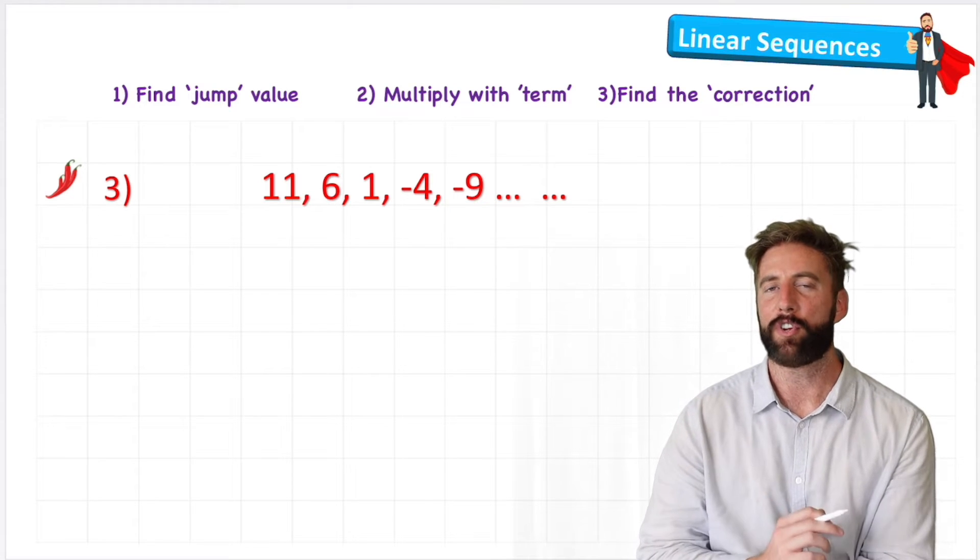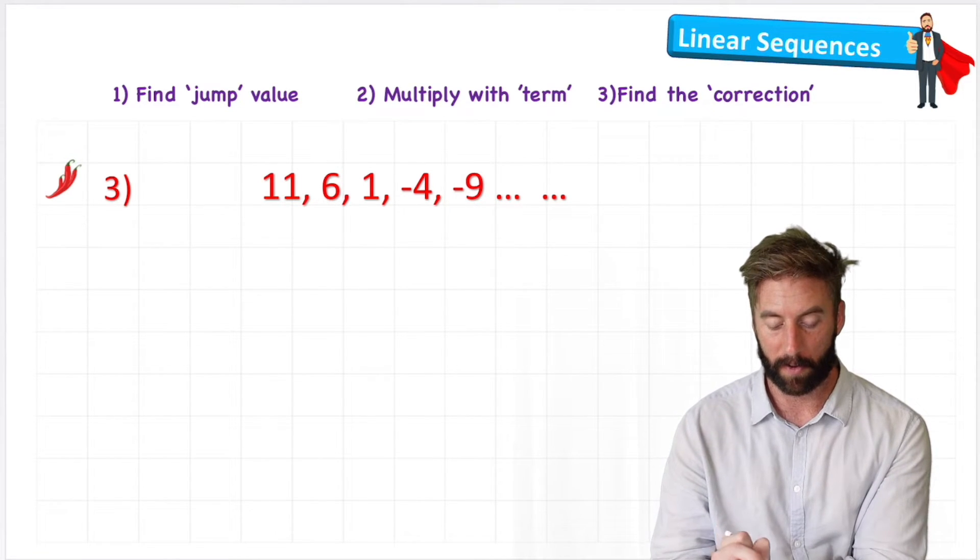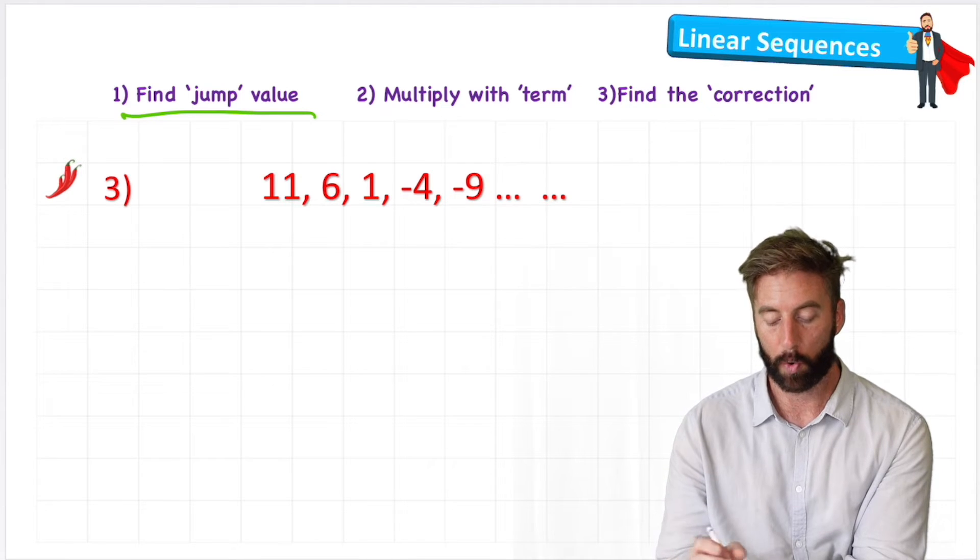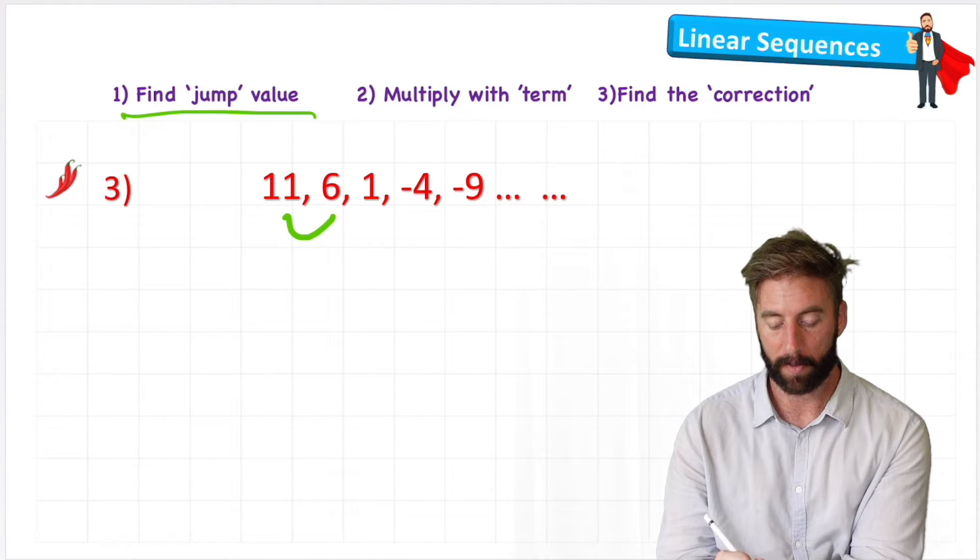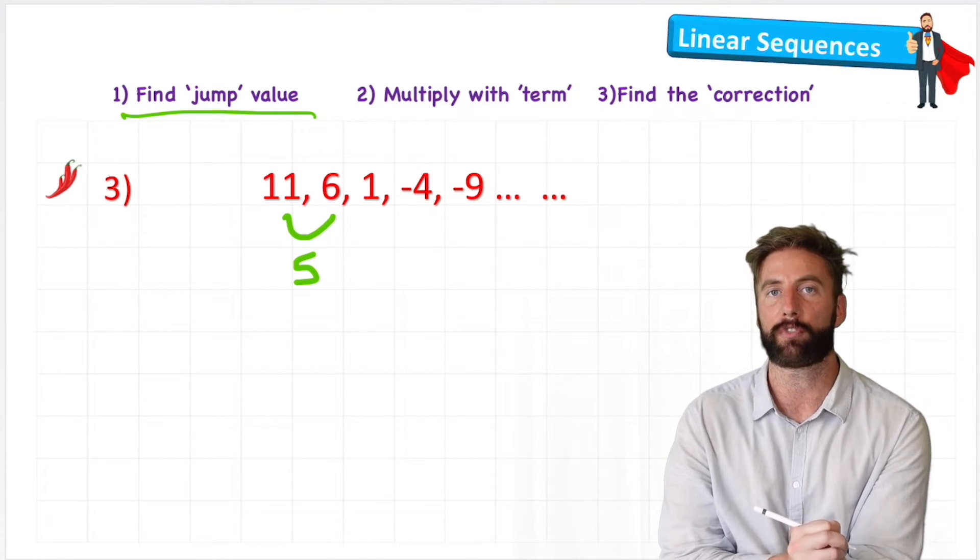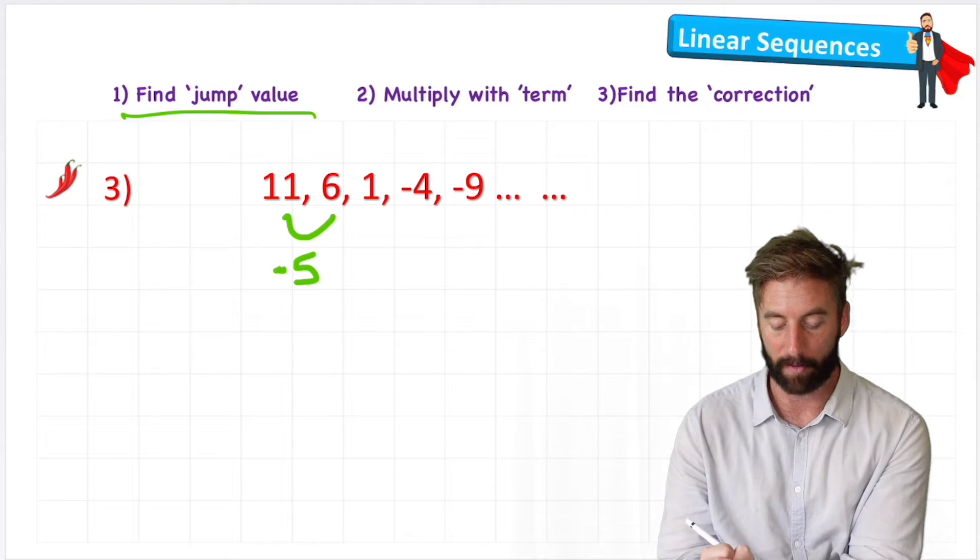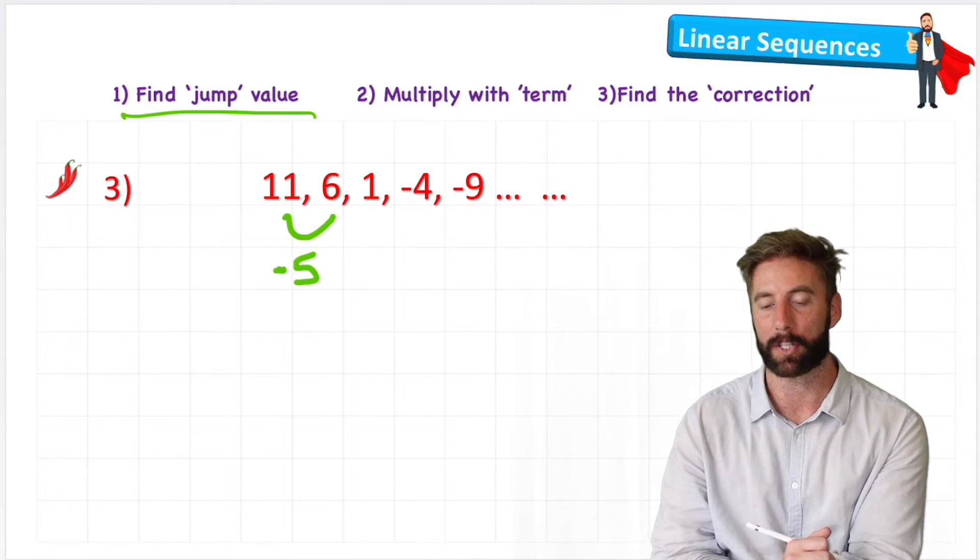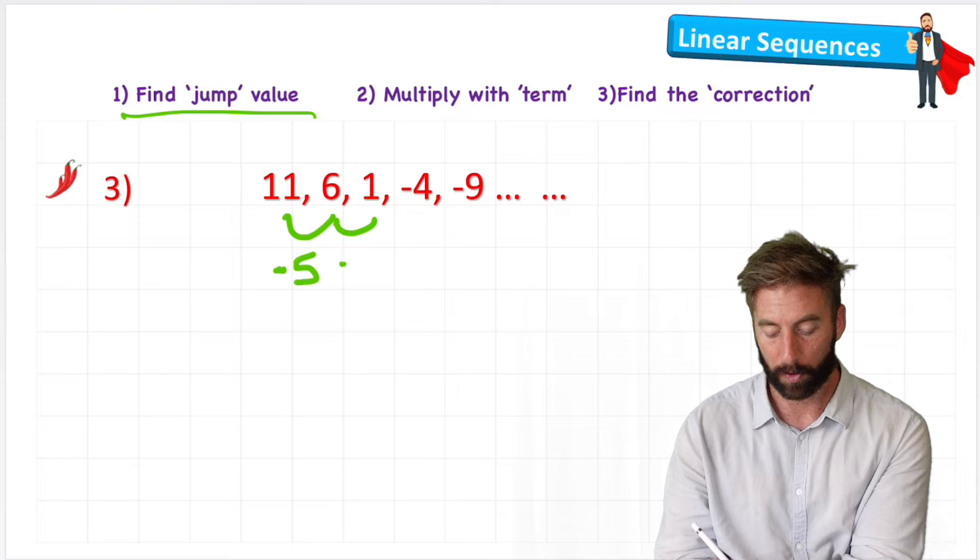Let's have a look at a really challenging one. So first thing we're going to do is find our jump value again. So what's the difference between 11 and 5? Well, it's 5, but it's not just 5, it's negative 5, because we're now descending our numbers. What's the difference between 6 and 1? Also negative 5. 1 and minus 4, negative 5.